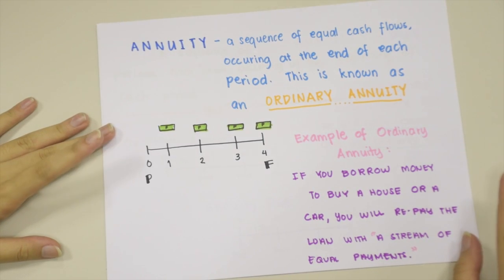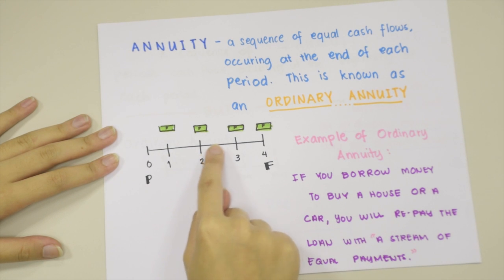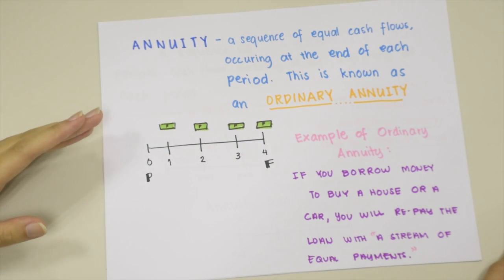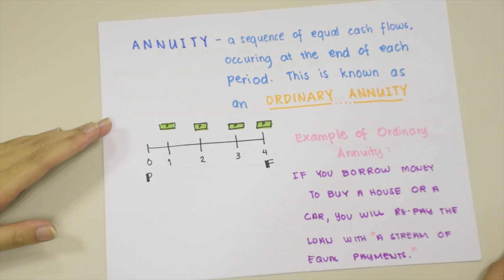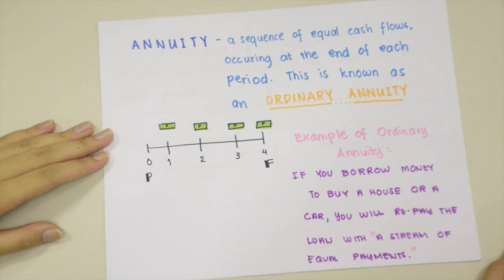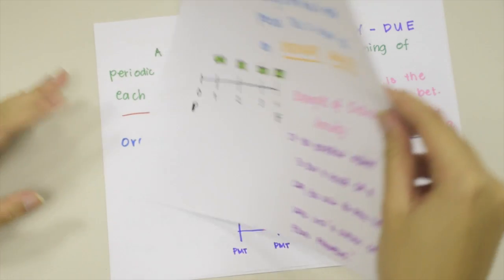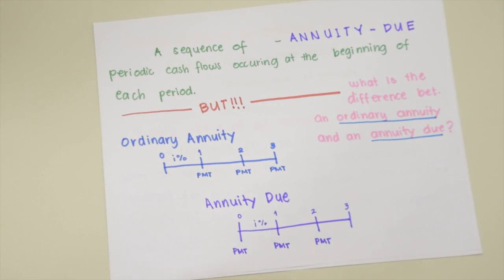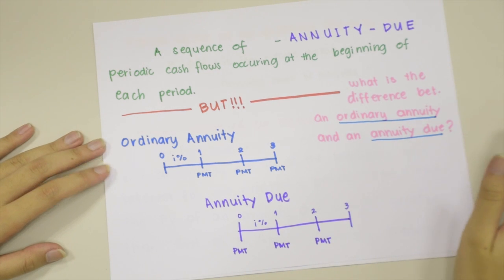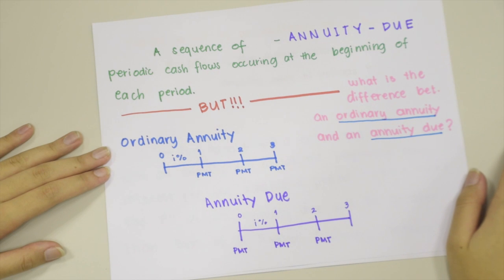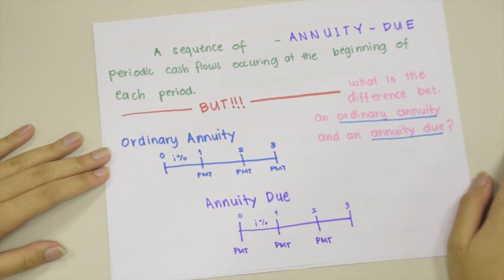So now let's move on to annuity. Annuity is a sequence of equal cash flows occurring at the end of each period — this is known as an ordinary annuity. An example of an ordinary annuity is if you borrow money to buy a house or a car; you will repay the loan with a stream of equal payments. Annuity has two types: ordinary annuity, and annuity due.